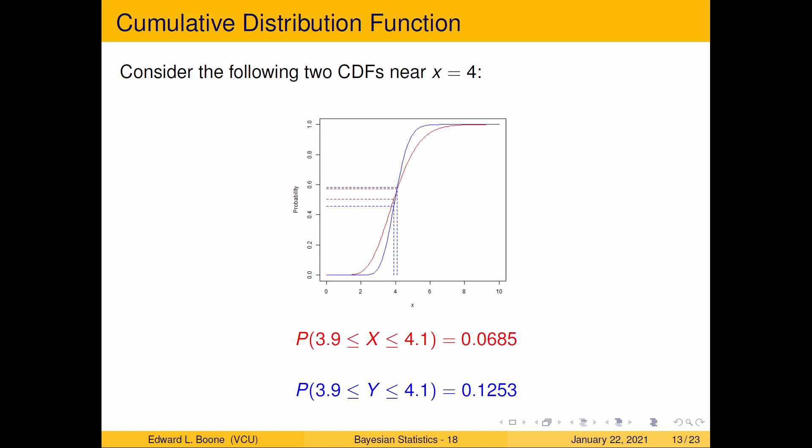We can get even closer. We can go to 3.9 and 4.1. And notice that now we're at 0.0685 for the red, but the blue is still 0.1253. So it's almost twice the probability that the red one is. And then I can get really, really close. And I can see that on this really close one, I have 0.006 and over here, I have 0.0125. And notice that this one is about twice as much as that one.